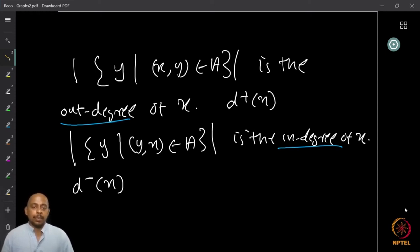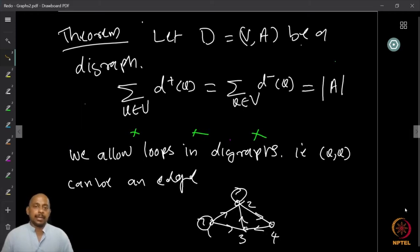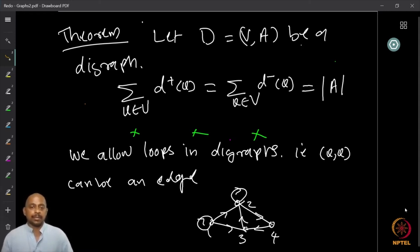If I have an arc from x to y, it contributes 1 to the out-degree of x and 1 to the in-degree of y. Therefore the following theorem is immediate: for a digraph D = (V, A), the sum over all vertices of d⁺(v) equals the sum of d⁻(v), which equals the cardinality of the arc set |A|. This is immediately clear and the proof follows directly.